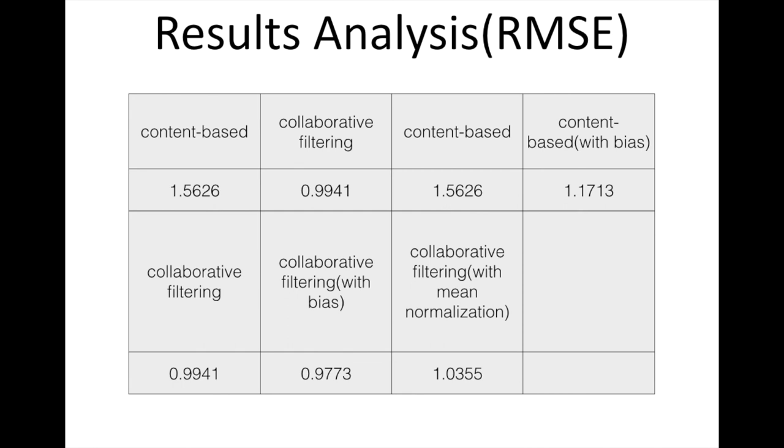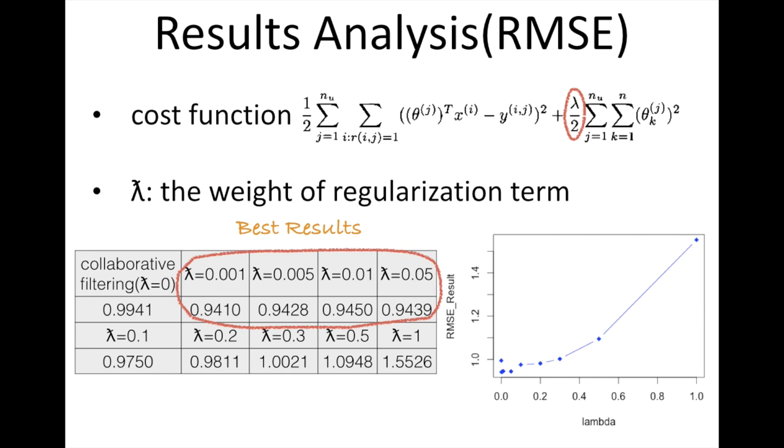Actually, adding bias term here is adding another feature vector. It is good to have another one, but it does not work very well. Here is the diagram for regularization term. Lambda is the number that represents the weight of regularization term in cost function. So we can see when lambda is about 0.005 or 0.01, the algorithm gave the best results.